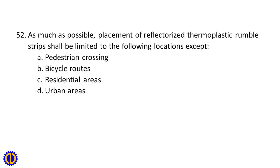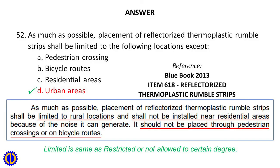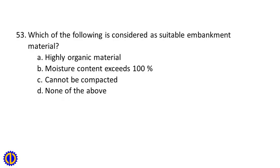Question 52: As much as possible, placement of reflectorized thermoplastic rumble strips shall be limited to the following locations, except A. Pedestrian crossing, B. Bicycle routes, C. Residential areas, D. Urban areas. Answer: D. Urban areas. Explanation: Placement shall be limited to rural locations and shall not be installed near residential areas because of the noise it can generate. It should not be placed through pedestrian crossings or on bicycle routes. 'Limited' is the same as restricted or not allowed to a certain degree.